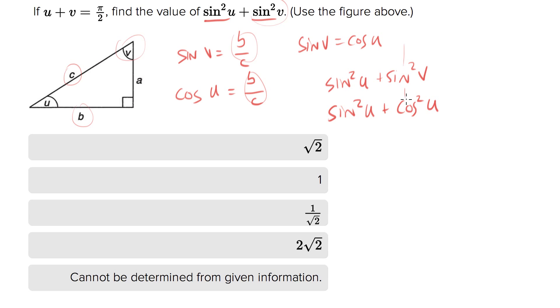I switch sine to cosine and v to u. But sine squared u plus cosine squared u, we know that. That's a trig identity. That's equal to 1. So that's your answer.